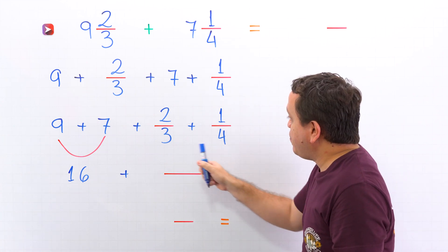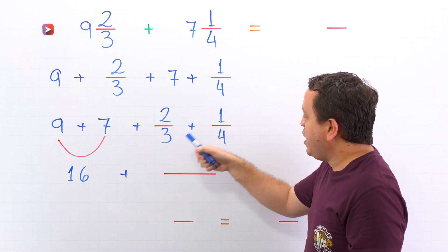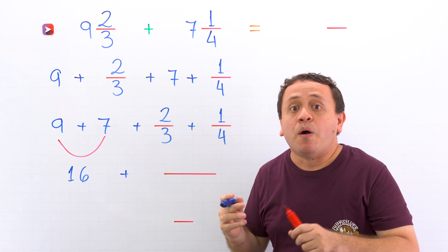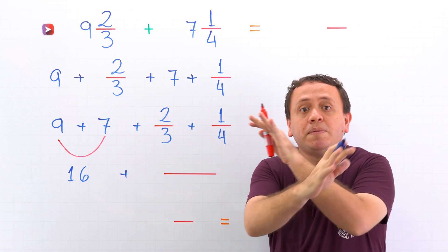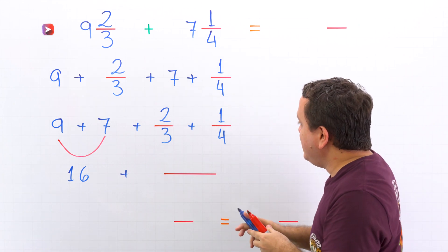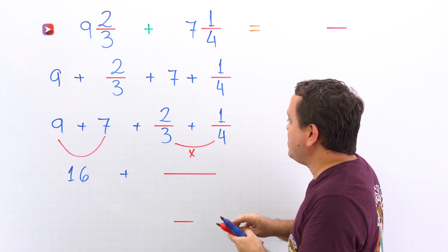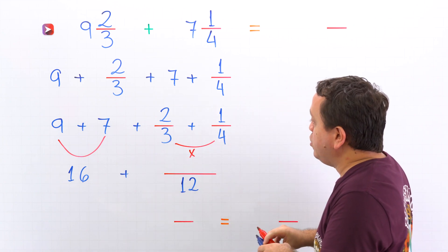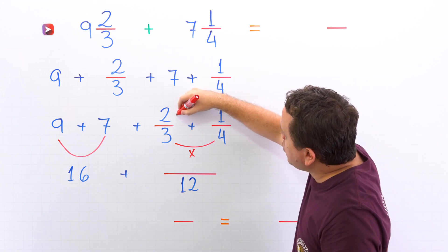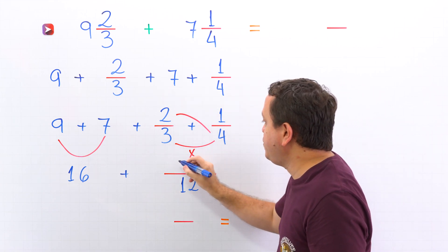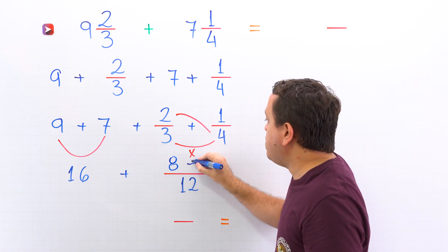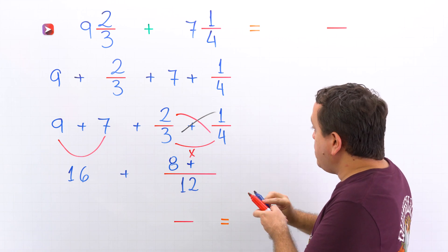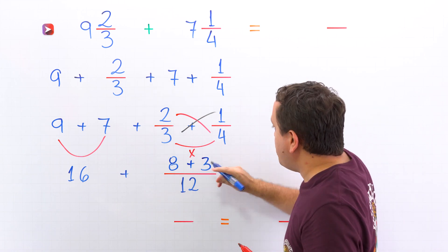These two fractions have different denominators — 3 over here, 4 over here. For fractions with unlike denominators, I love to use the cross multiplication method, the butterfly. In this method, we start by multiplying the denominators, and 3 times 4 gives us 12. Then we're going to cross multiply. On this side, we have 2 times 4, and 2 times 4 gives us 8. Now we put the plus sign, and on the other side, we have 3 times 1. 3 times 1 gives us 3.